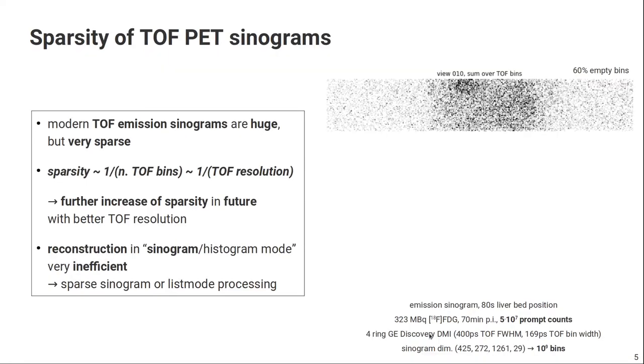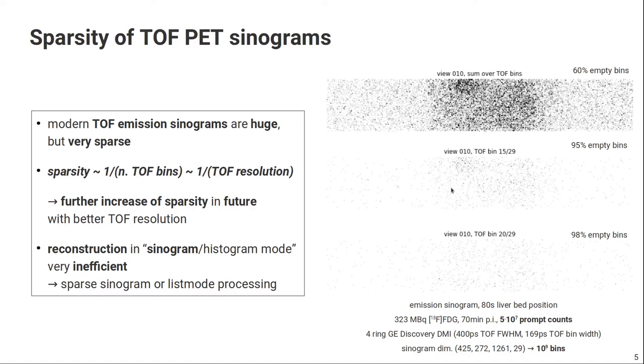To convince you that the time-of-flight emission data is indeed very sparse, I've shown here a sinogram view from a whole-body FDG scan on the GE Discovery DMI PET-CT. On the top right, you can first of all see the non-TOF sinogram, and you can already see that the data is very sparse. So 60% of the data bins are actually empty. If you have a look at the time-of-flight sinogram, you can see in the middle the central TOF bin where we would expect most of the counts, but you can see actually most of the bins are zero. It's 95% of them.